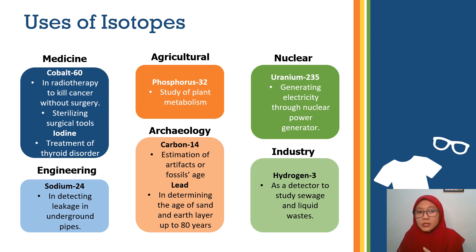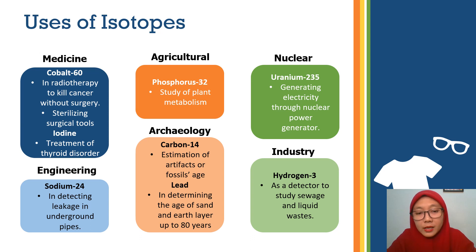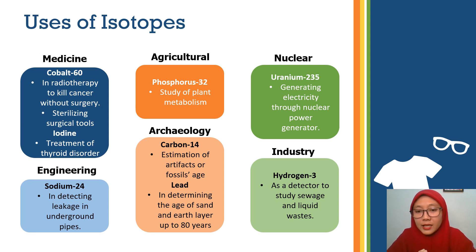In agriculture, they use Phosphorus-32 to study plant metabolism. For nuclear power, we have Uranium-235, which is used to generate electricity through a nuclear power generator. In engineering, Sodium-24 is used to detect leakage in underground pipes. In archaeology, Carbon-14 is used to estimate the age of artifacts and fossils. Lead is used to determine the age of sand and earth layers up to 80 years. In industry, they use hydrogen as a detector to study sewage and liquid waste.